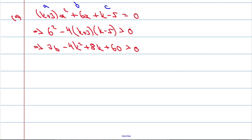Now, we're just going to tidy things up. So I'm going to write these in descending powers of k, so -4k² + 8k, and the 36 and the 60 adds together to give us 96. That must be greater than 0.